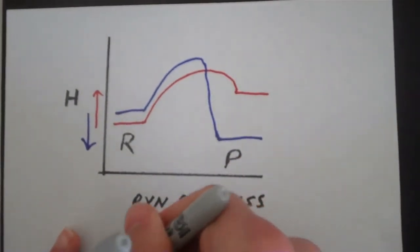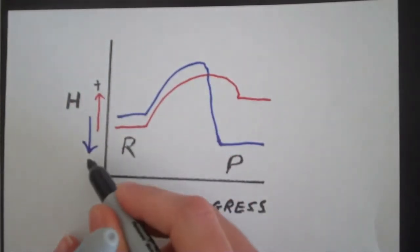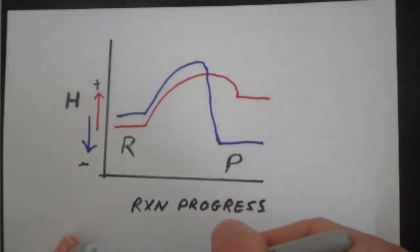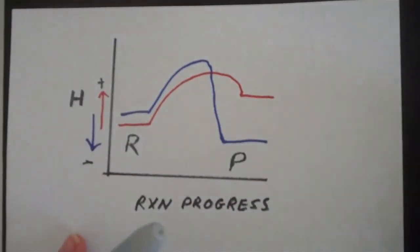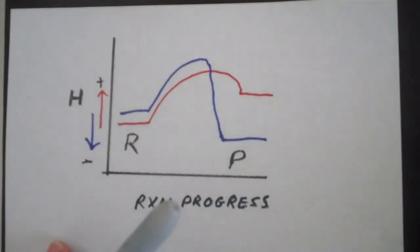That means you have a positive delta H here and a negative delta H here. This is probably something that you may encounter on a test at some point. I hope that was helpful and all the best.